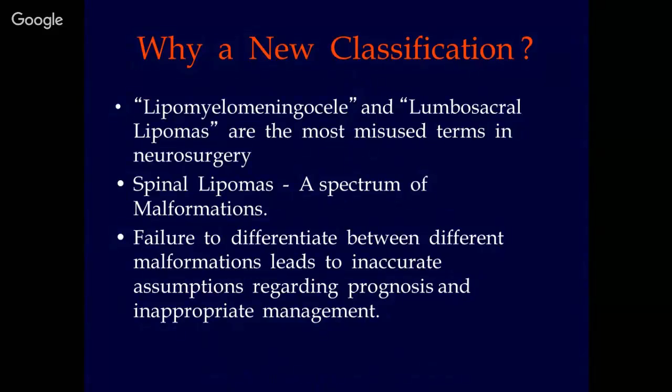On one end of the spectrum lies the filar lipoma, where the surgery is relatively straightforward and the long-term outcome is extremely good. Whereas on the other end are the transitional lipomas and chaotic lipomas where the outcome is less than optimal. When we lump together all these lipomatous malformations as a single entity using a term such as lipomyelomeningocele or lumbosacral lipoma, we end up failing to differentiate the different malformations, which leads to inaccurate assumptions regarding prognosis and inappropriate management.